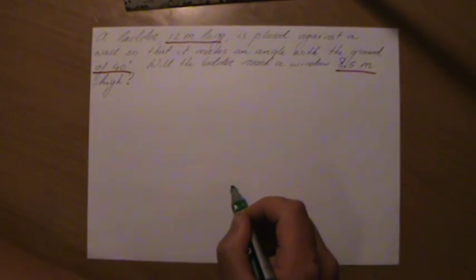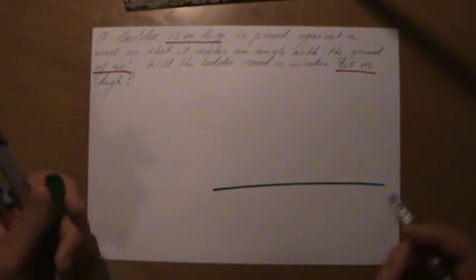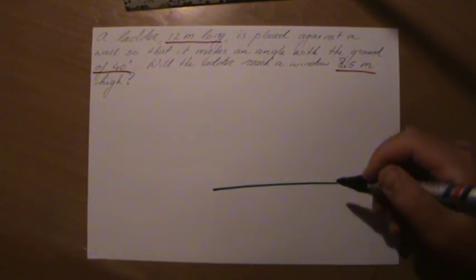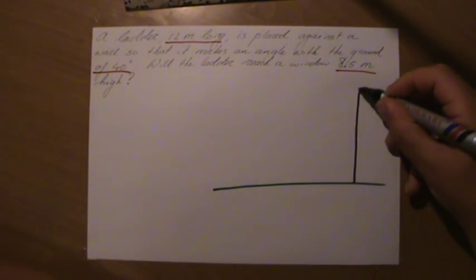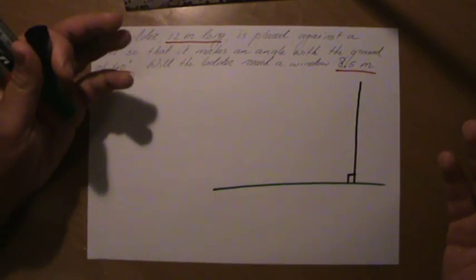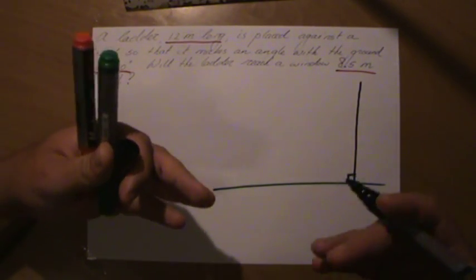And often with these word problems, you have the ground, the earth, the floor, and that will be your horizontal. And then we have a building or a tree or in this case a wall, that is your vertical. And that's the 90 degree angle you're looking for. Trigonometry, Pythagoras, we need a 90 degree angle, a right angle.